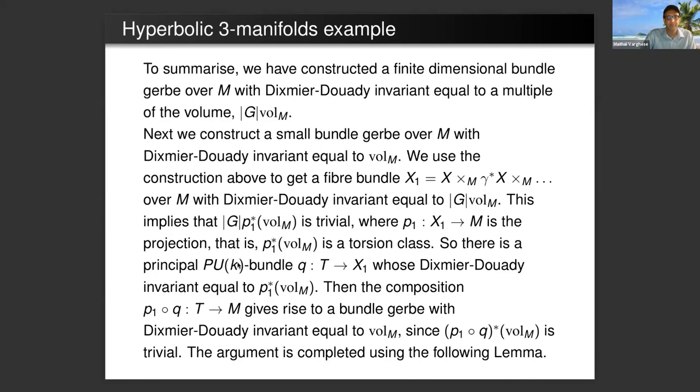This is the total space of the fiber bundle whose Dixmier-Douady invariant is |G| times volume of M. This implies that |G| times the pullback of the volume of M is trivial, where P_1 is the projection map from X_1 to M. It follows that P_1 pullback of the volume form is a torsion class. There is a principal finite dimensional PU_k bundle T over X_1 whose Dixmier-Douady invariant is equal to this torsion class. Then the composition of P_1 and Q gives a bundle gerbe with Dixmier-Douady invariant equal to volume of M.